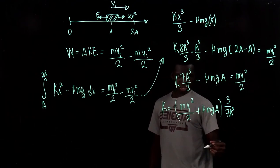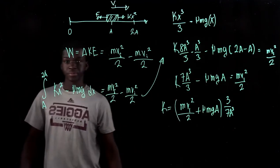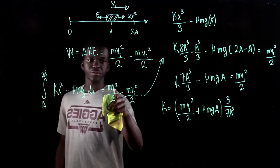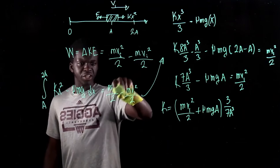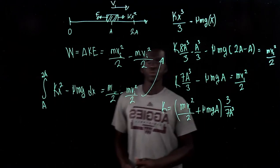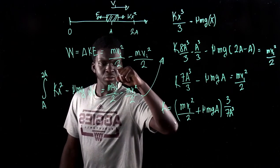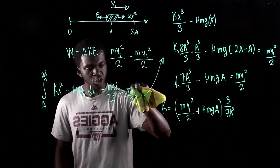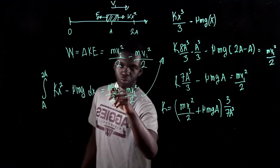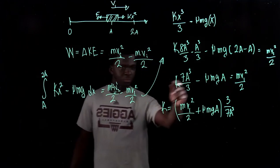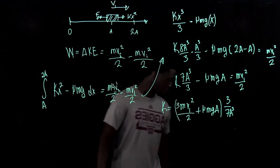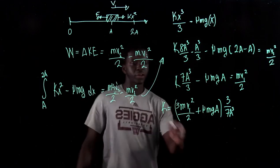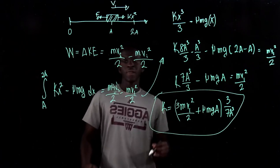I figured out where I made an error. The vf at 2a is 2v1, so (2v1)² equals 4v1². The initial velocity is v1, not zero, so mv_initial² is mv1². Subtracting: 4v1² minus v1² gives 3mv1². That is where the final answer comes from: k equals [3mv1²/2 plus μmga] times 3/(7a³). That's the correct final answer for question one.